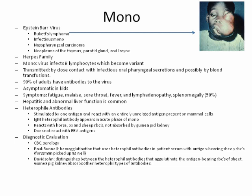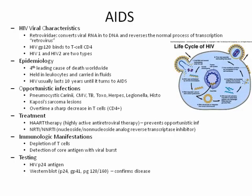Heterophile antibodies are stimulated by one antigen and react with an entirely unrelated antigen. When we do a mono test, we need to remove heterophile antibodies before testing. Modern test kits are capable of avoiding those, but in the past multiple steps were required to get rid of interfering heterophile antibodies before doing the actual testing.